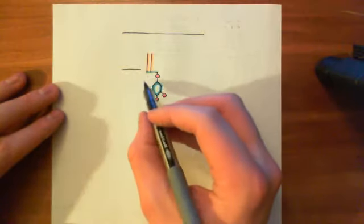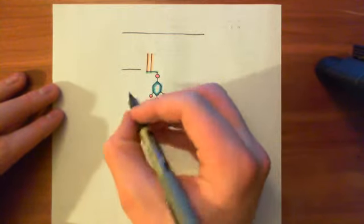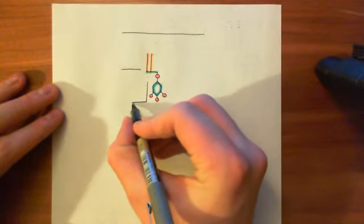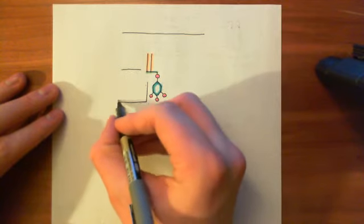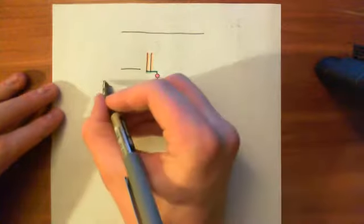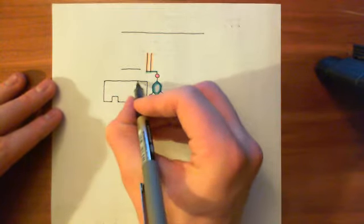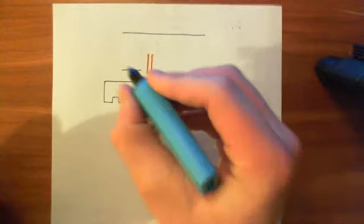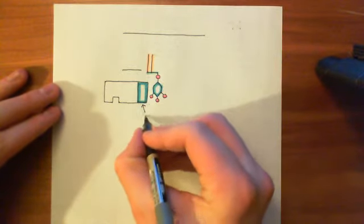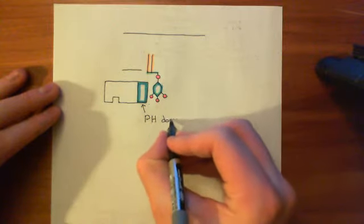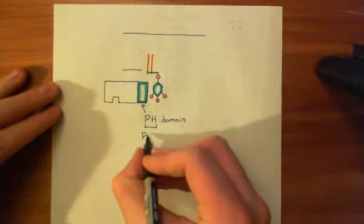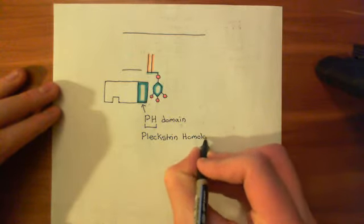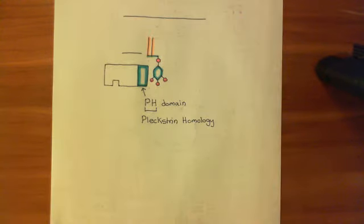Certain proteins are capable of binding to phosphatidylinositol 3,4,5-trisphosphate molecules. In order to bind, they must have a special domain known as a pleckstrin-homology domain, or PH domain. This portion in blue of the enzyme is the pleckstrin-homology domain. It is named after the protein pleckstrin — spelled P-L-E-C-K-S-T-R-I-N — the protein in which this domain was originally found.